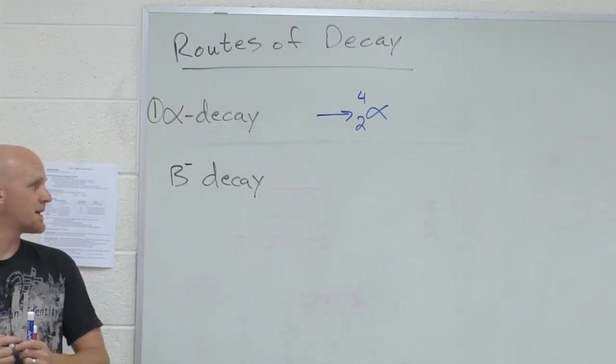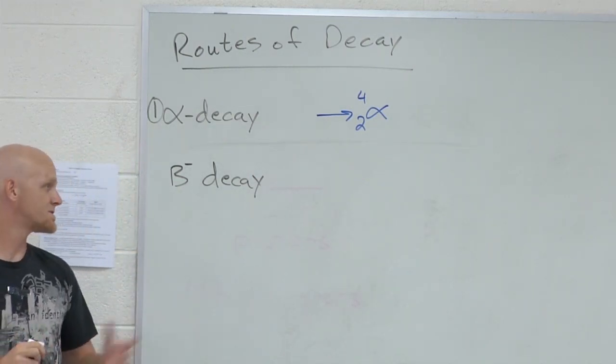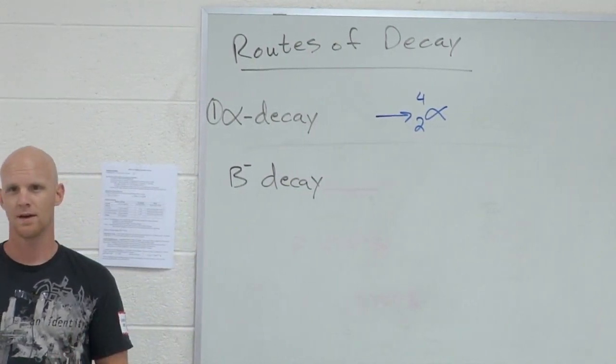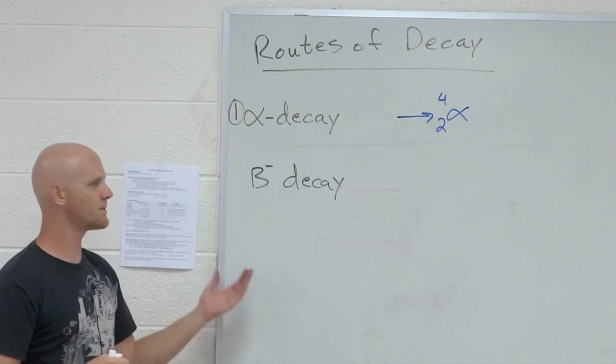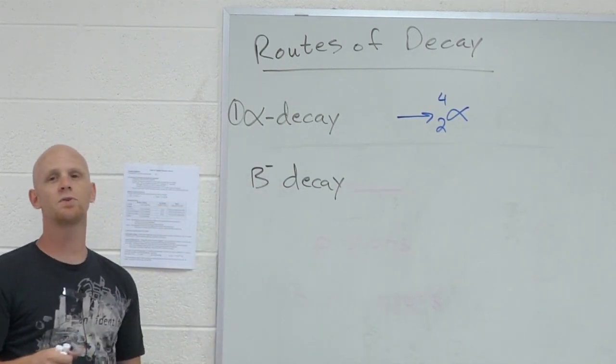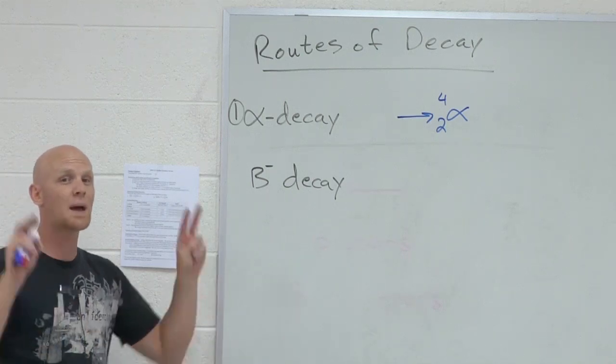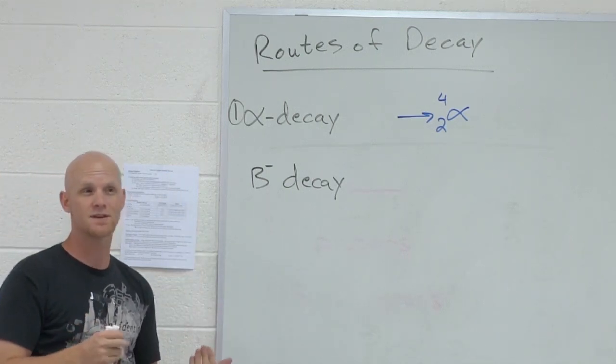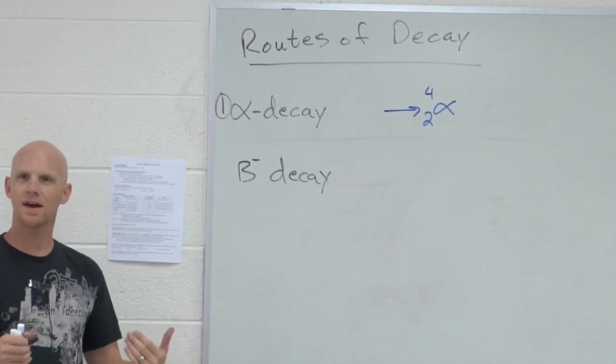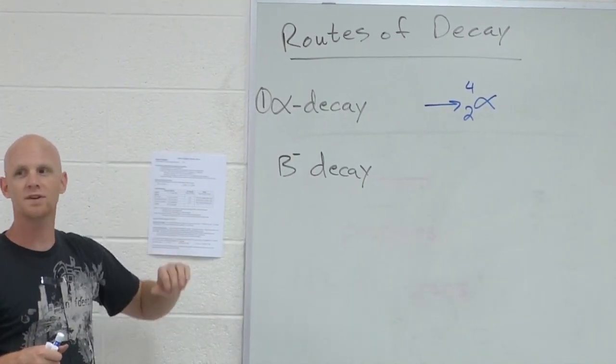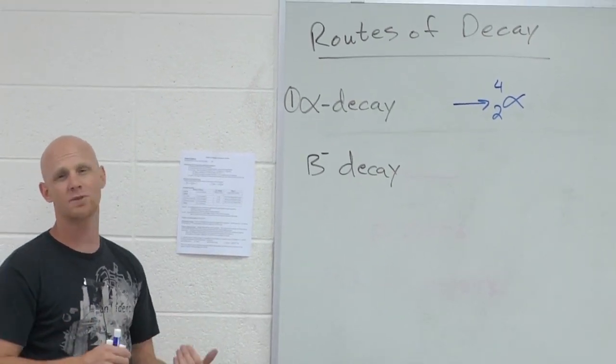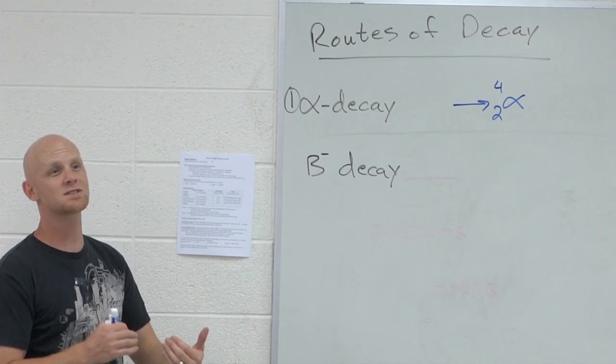The first beta decay they ever knew about was just simply beta emission, electron emission. And because that was the first one they ever knew about, they just simply referred to beta decay as that. Subsequently, they found two nuclear reactions later on that also involved beta particles of some sort. One was a positron. If we talk about beta decays, we usually just refer to this one. The other two are types of beta decay, but we usually give them special names and talk about positron emission and electron capture to specify.